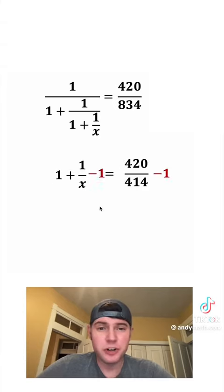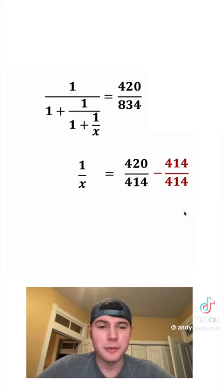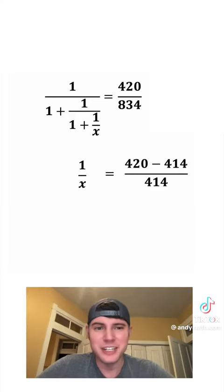Drop the parentheses, subtract 1. These two cancel. And this needs a common denominator. Combine it into a single fraction. 420 minus 414 is 6.